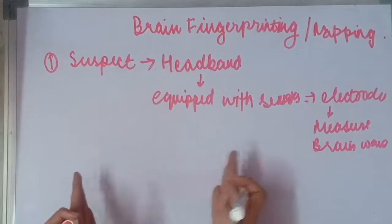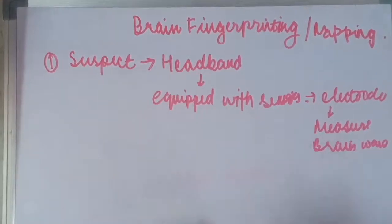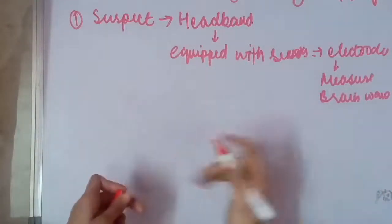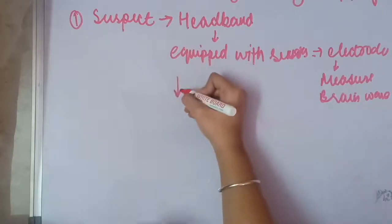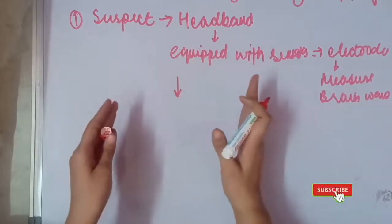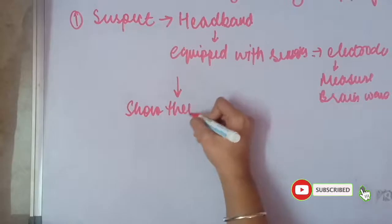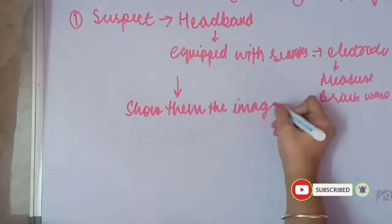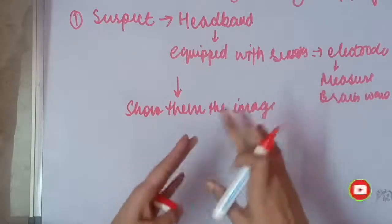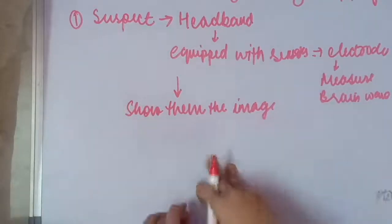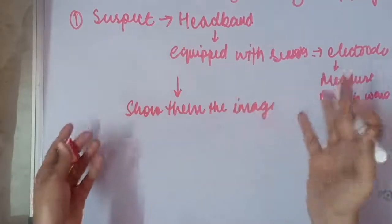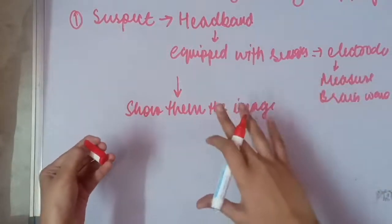After this, an image is shown to the person that we think the suspect would have seen earlier and hence will be able to see a response. After setting up the headband, we will show them the image. This image would be shown on a mobile phone or computer screen or a printout. When the brain recognizes something familiar that they have seen already, then it will elicit a wave-like response.